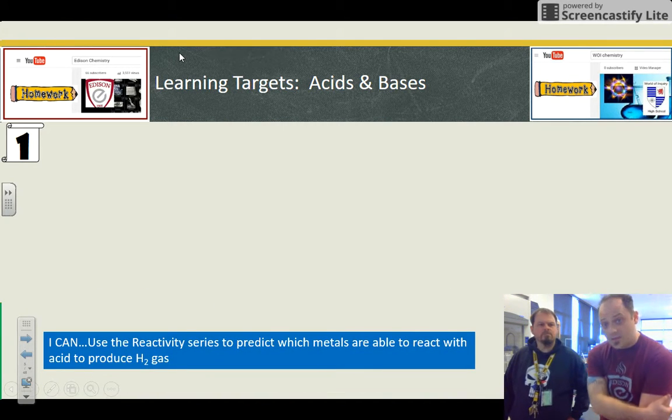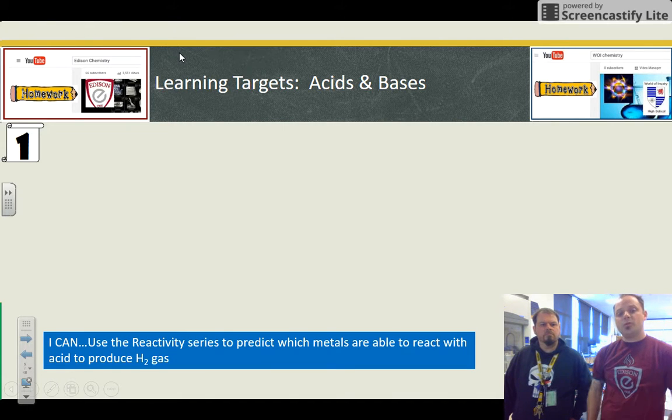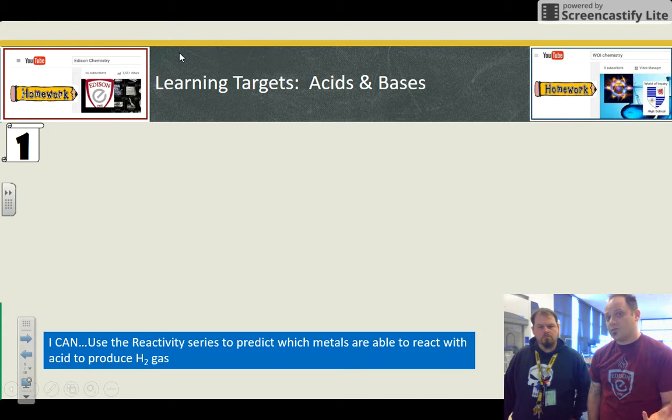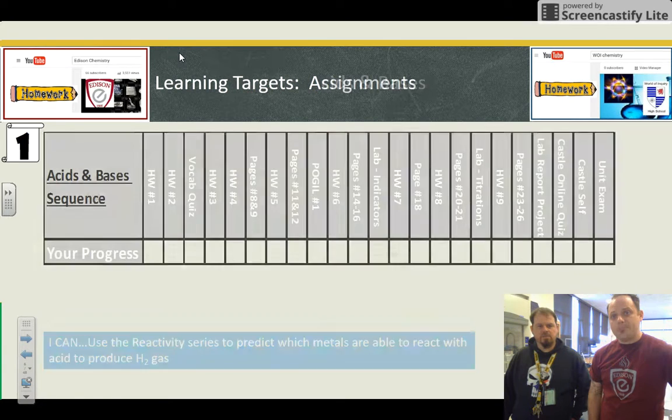Can we use the reactivity series - there's another reference table - to predict which metals would react with acid to produce gas? Some will, some won't. That reactivity series will help us figure it out.